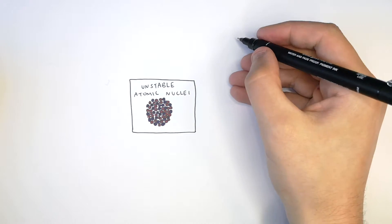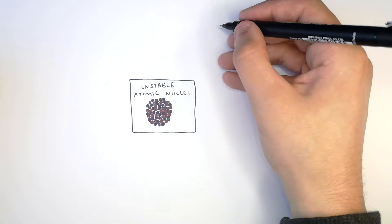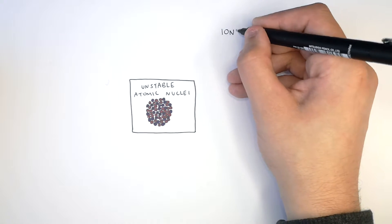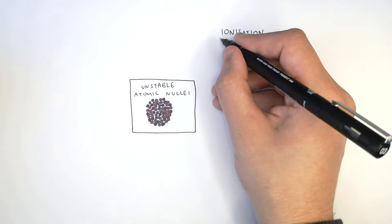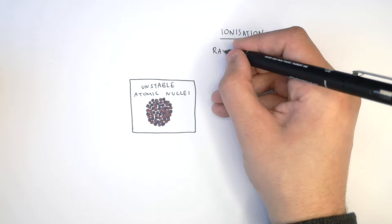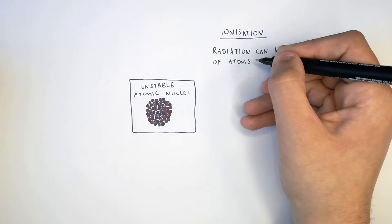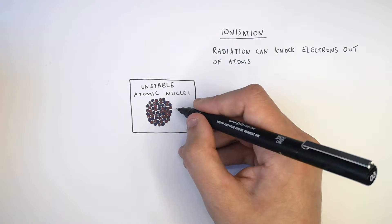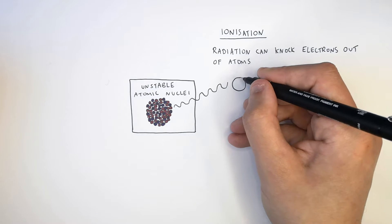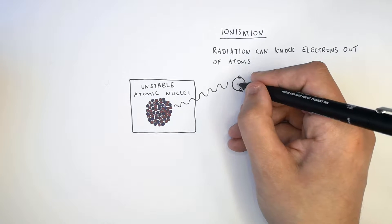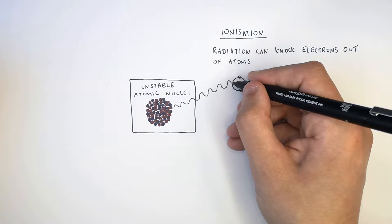Let's now look at the different properties of the three types of radiation: alpha particles, beta particles, and gamma rays. We're firstly going to look at the ionizing power of each. Ionization is when radiation knocks electrons out of atoms to make the atoms an ion. Gamma rays are ionizing, but they are the least ionizing of the three types — their ability to knock electrons out of atoms is less than beta particles and alpha particles.